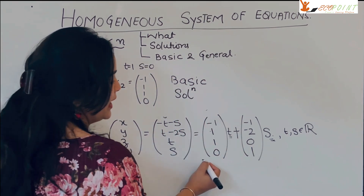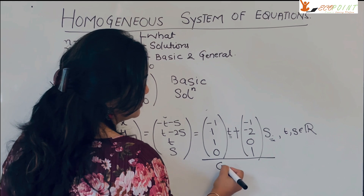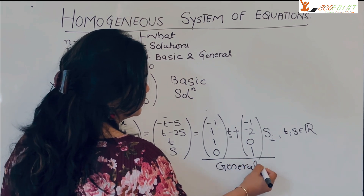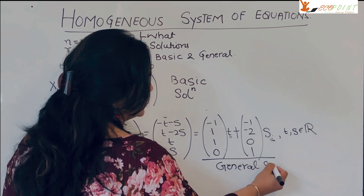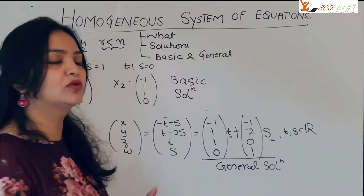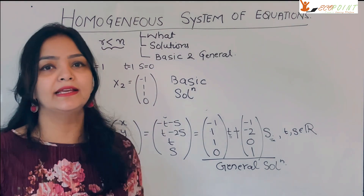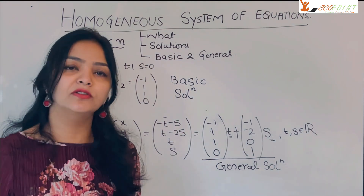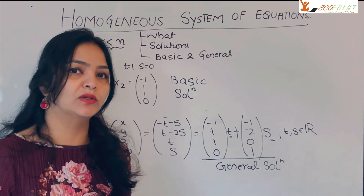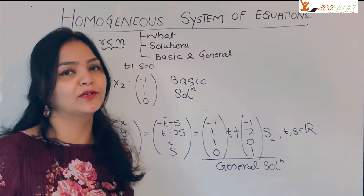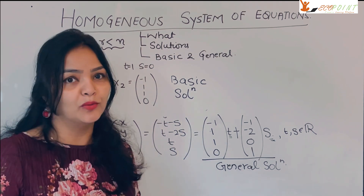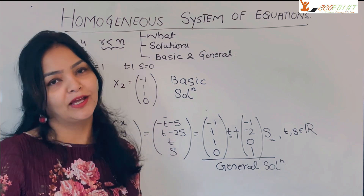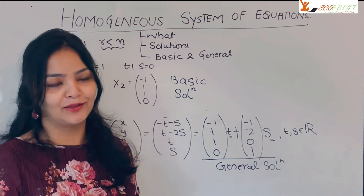What you have — T·(−1, 1, 1, 0) + S·(−1, −2, 0, 1) — is called the general solution to a homogeneous system of equations. In the next lecture, we will connect the general solution of a homogeneous system with the corresponding non-homogeneous system. Thank you very much, I hope this will really help you out.